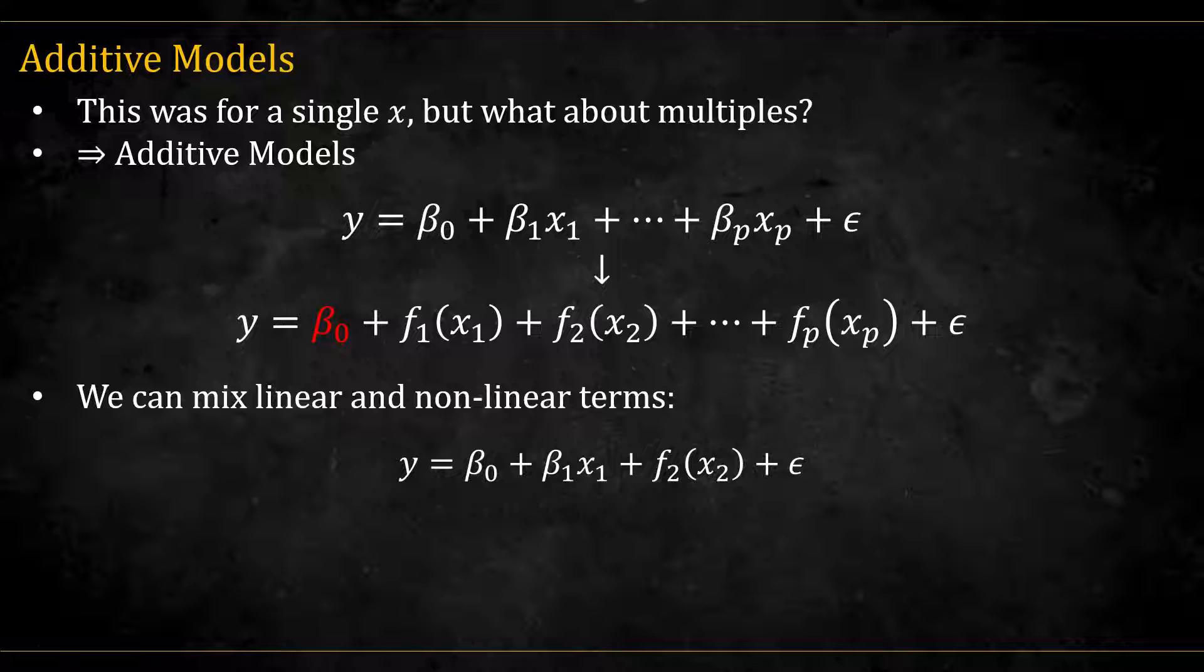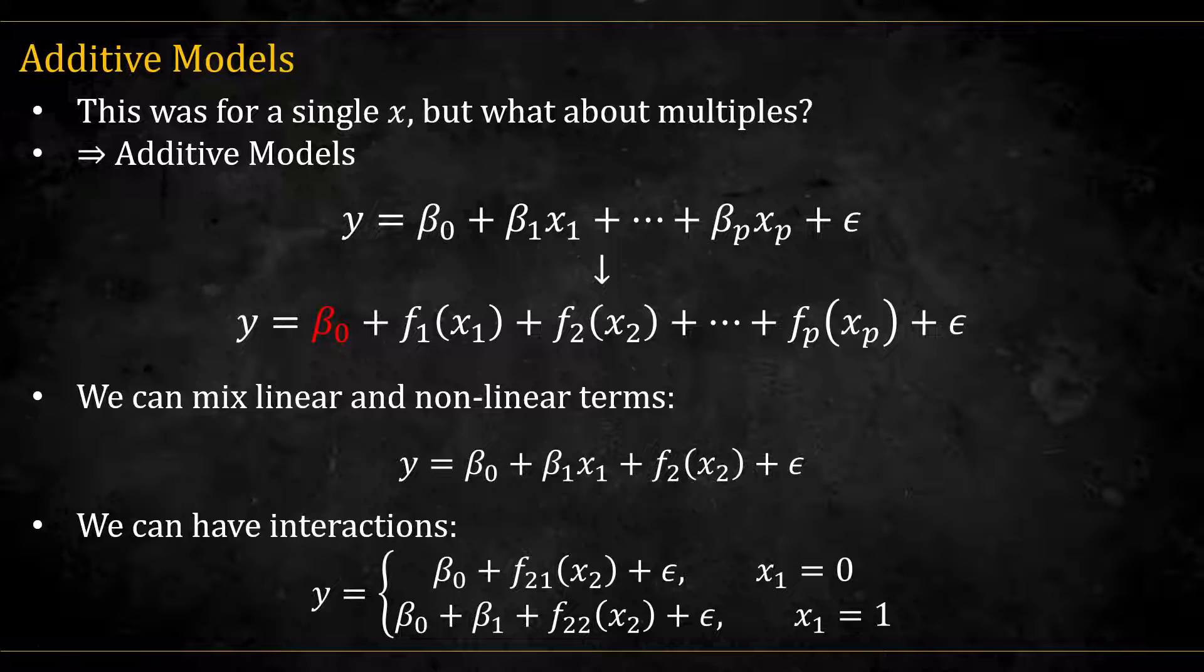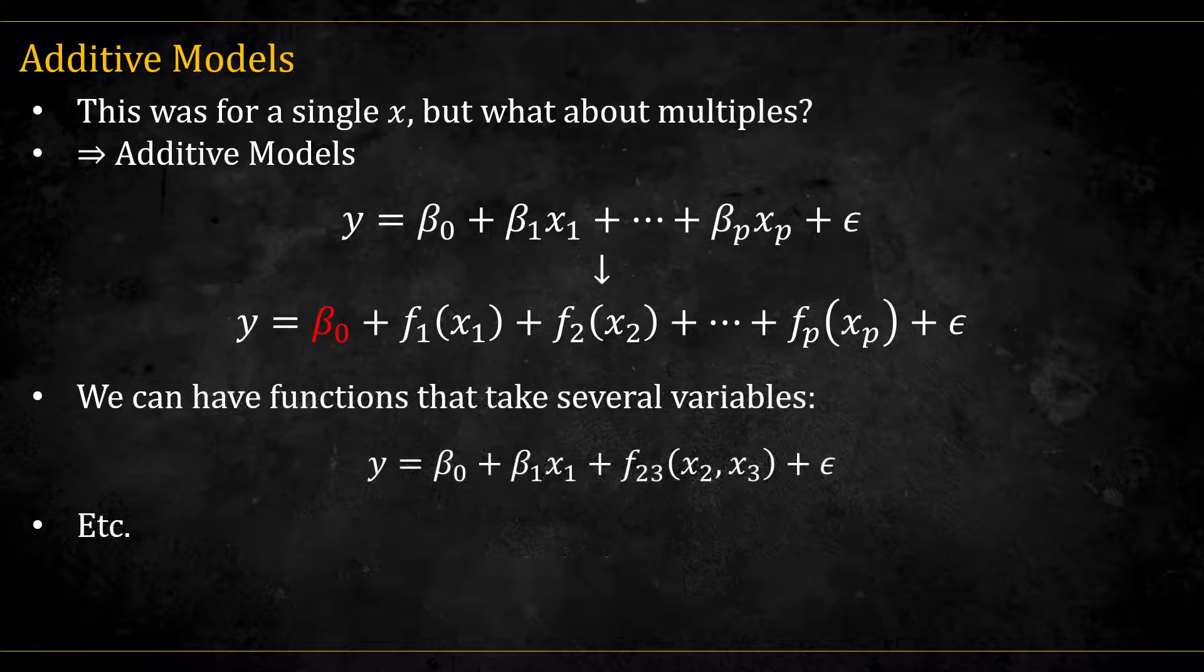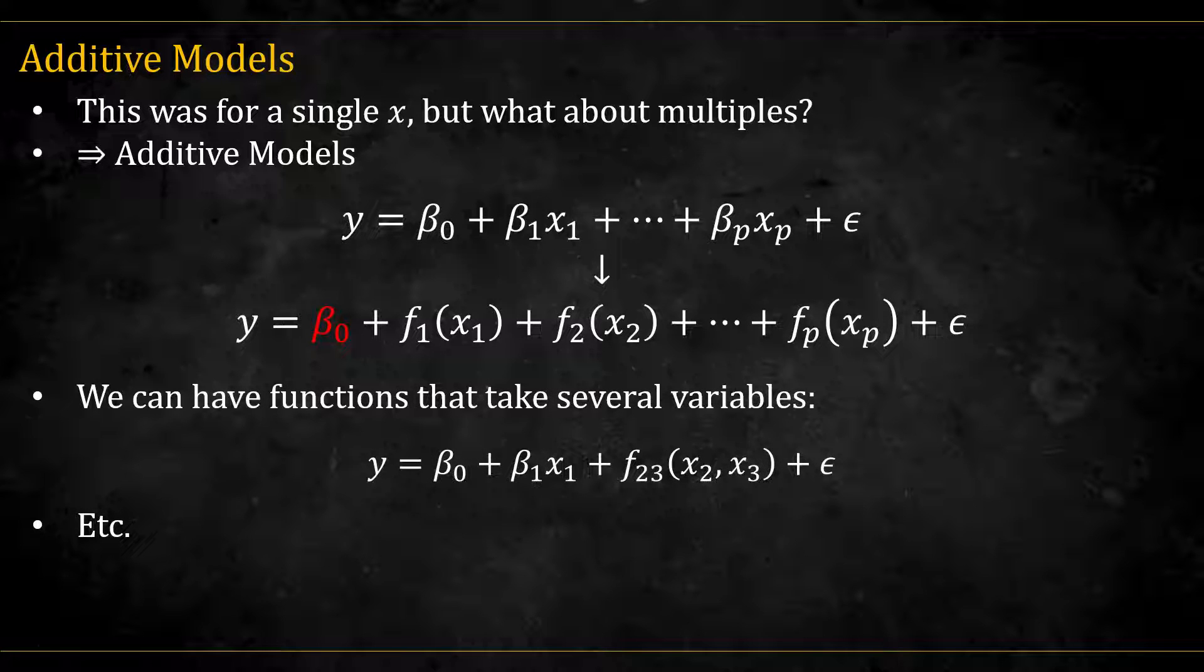We can also mix linear and non-linear terms, as you can see here, where x1 is linear, but x2 is modeled by a smooth function. And we can also have interactions. For example, one type of smooth x2 function when x1 is equal zero, and another when x1 is equal one. We can also model the interaction between two continuous variables, such as x2 and x3, by using a multivariate function.